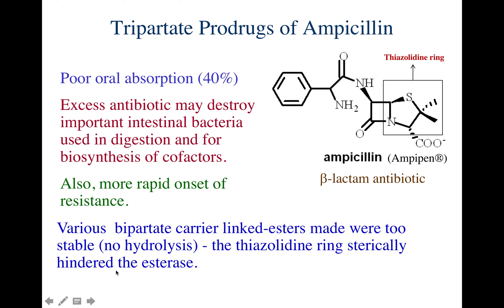The concentration of ampicillin cannot be increased because of poor oral absorption properties - increasing the dose could lead to side effects and also a rapid onset of resistance against the antibiotic. Various bipartite carrier-linked esters were made but were too stable - they didn't hydrolyse to release the drug. The thiazolidine rings sterically hindered the esterases, and the CH₃ groups caused steric hindrance making them too stable.